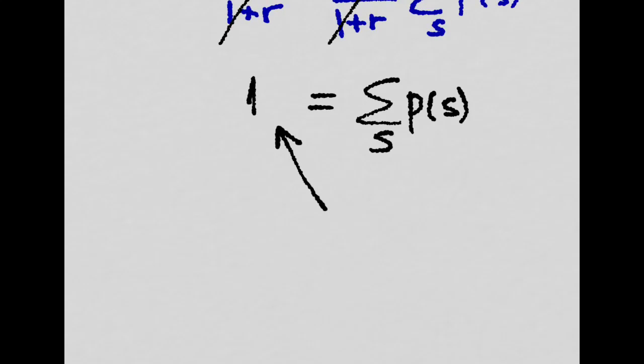So you basically constructed a portfolio of Arrow-Debreu securities that works like a bond, because you know that you are going to be paid one unit of output in the future.